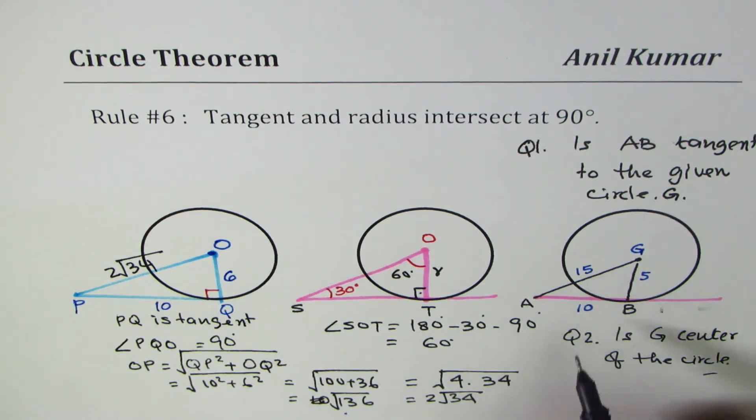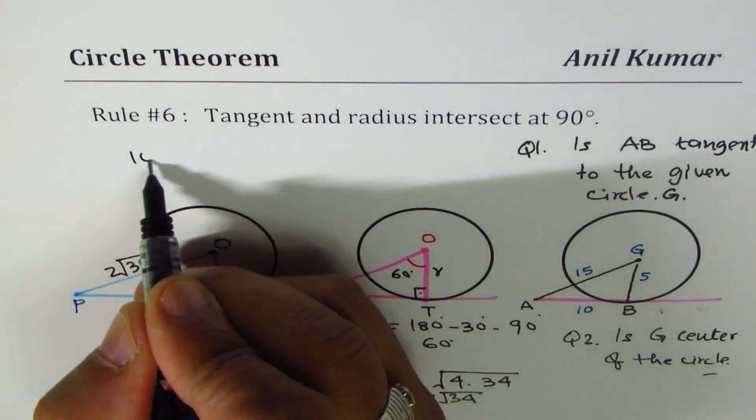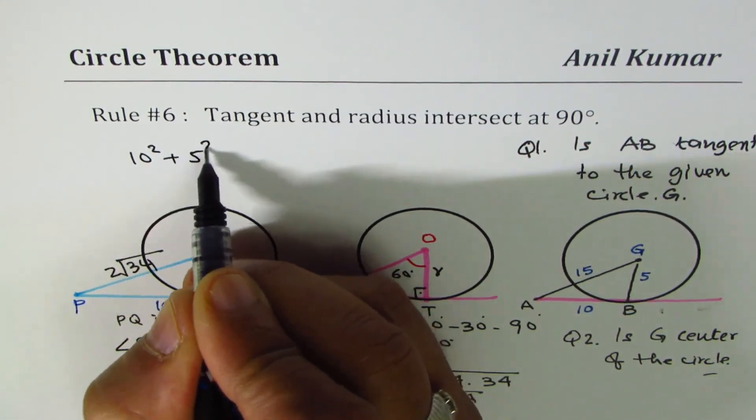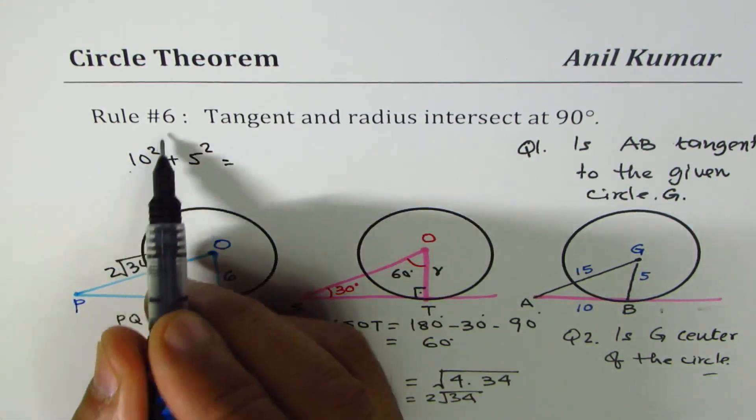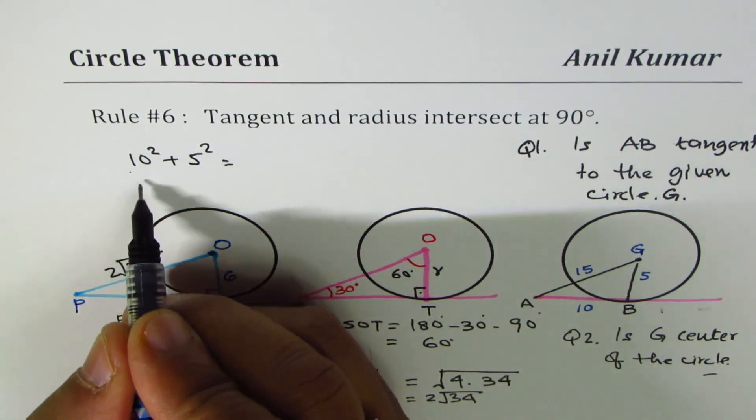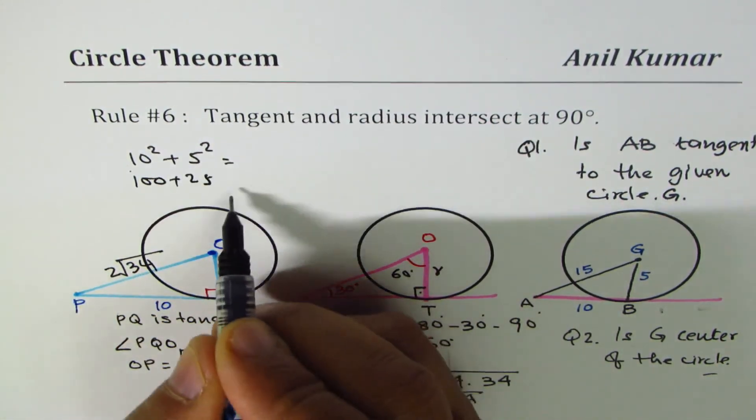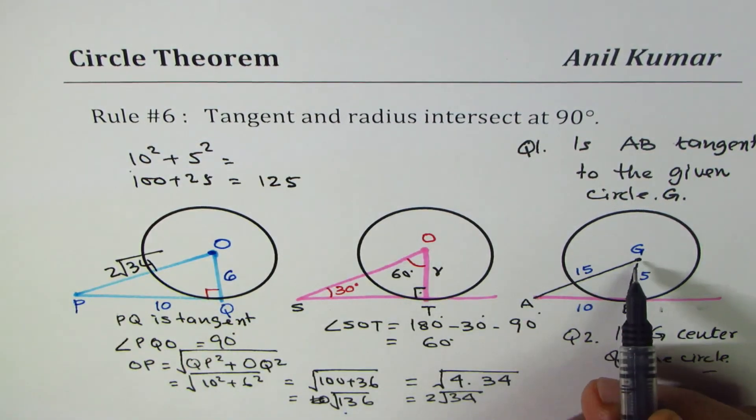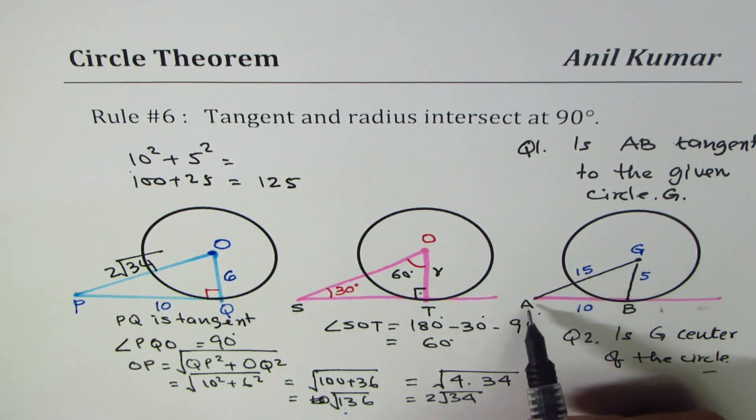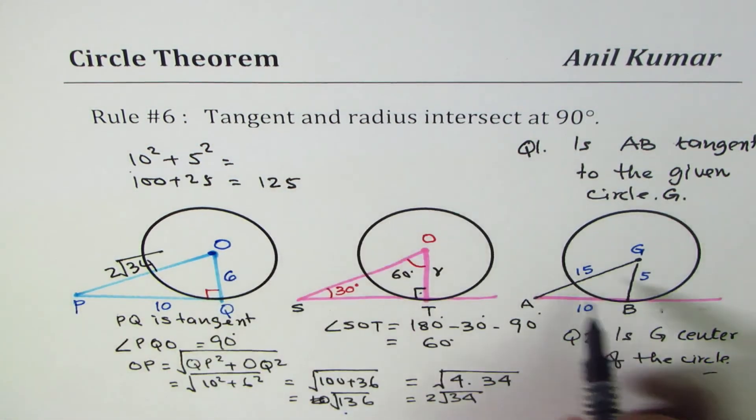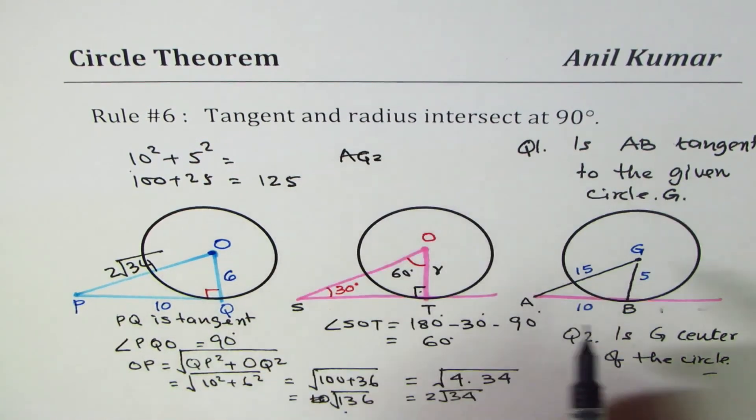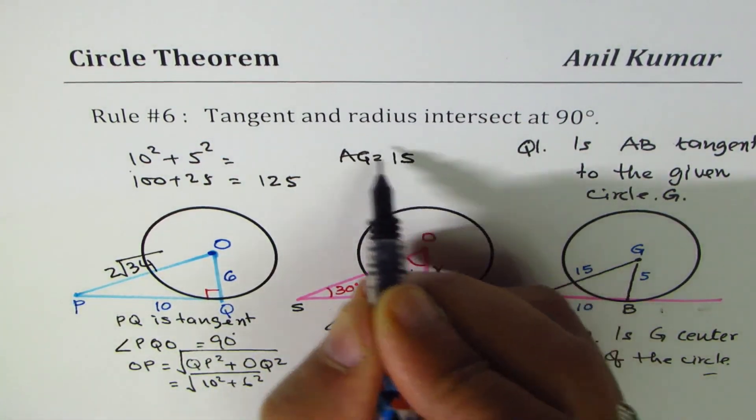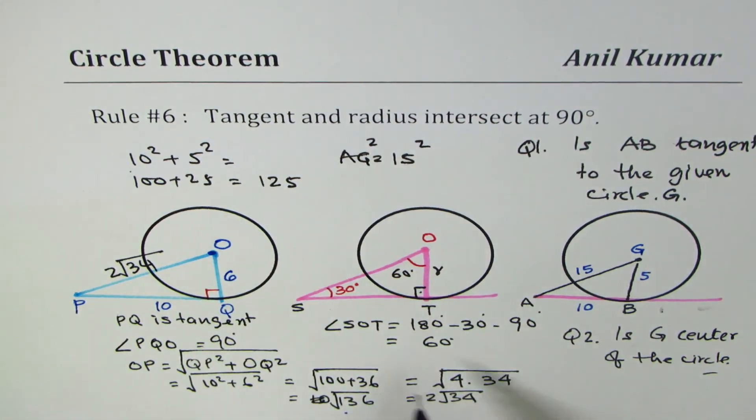Either way, what you have to do is check what 10 squared plus 5 squared equals. Now 10 squared plus 5 squared equals 100 plus 25, which is 125. The given hypotenuse AG in our case equals 15. AG squared will be 15 squared.